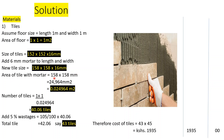The area of one tile with mortar is 158 × 158 mm = 24,964 mm², which converts to 0.024964 m². The number of tiles in 1 m² is 1 ÷ 0.024964 = 40.06 tiles. Allowing for 5% wastage (× 105/100), that gives us 42.06 — say 43 tiles.